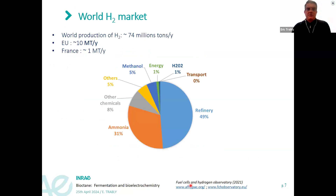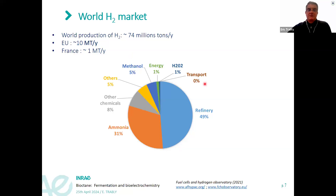The hydrogen market is a real market — about 74 million tons per year already produced, mostly from natural gas. In the EU it's about 10 million tons per year, and in France 1 million tons per year. It is mostly used as a chemical reactant in refineries — for gasoline production, to produce ammonia as a fertilizer (30% of hydrogen goes to ammonia production), and for solvents like methanol. Only a small percentage is currently dedicated to transportation.